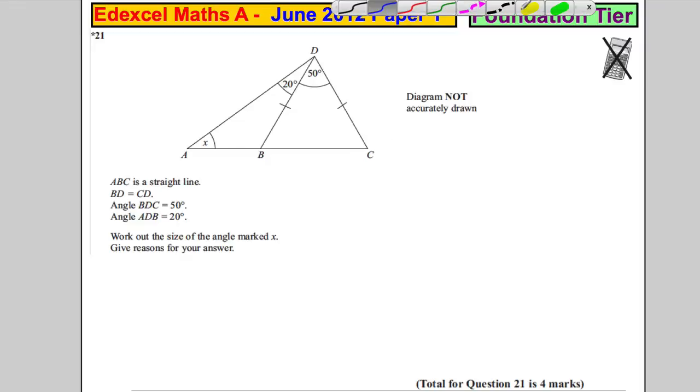Question 21 has a star, which means we're assessed on how we write our data. ABC is a straight line. BD equals CD, so we're basically being told this is an isosceles triangle. Triangle BCD is isosceles, therefore if I label this angle y, that will also be y.